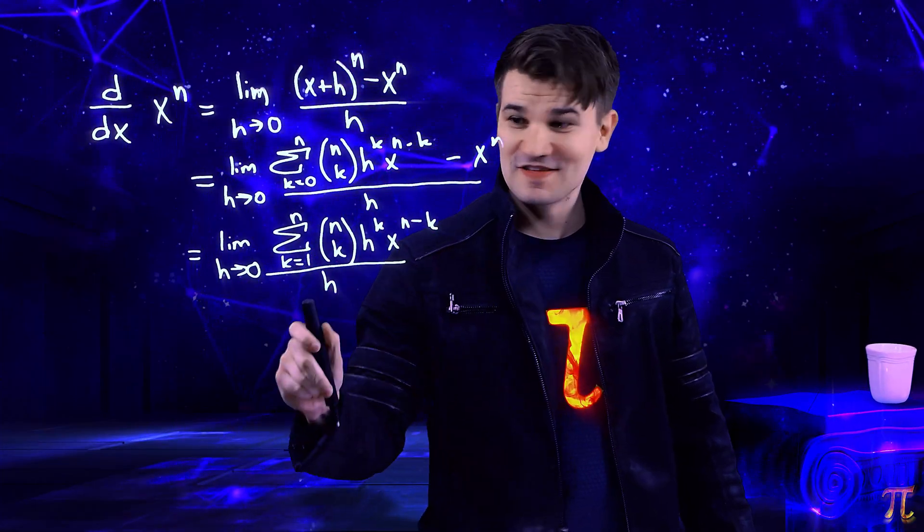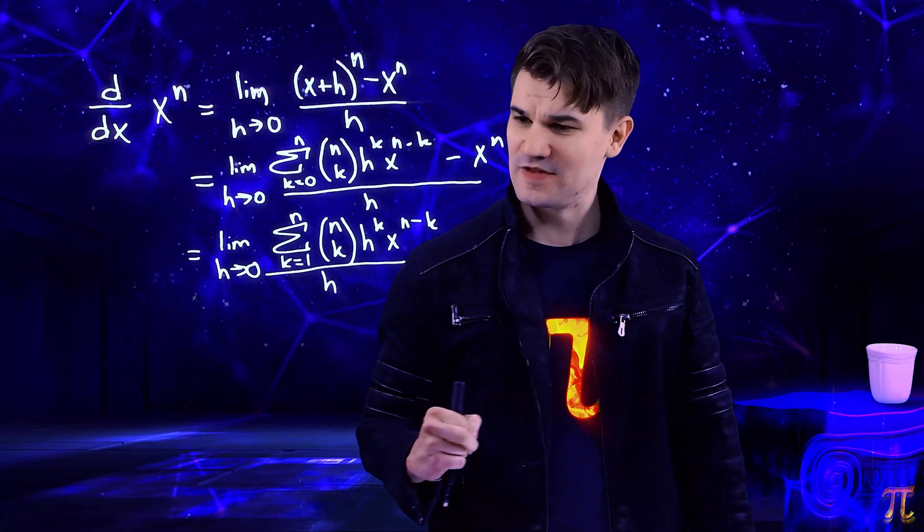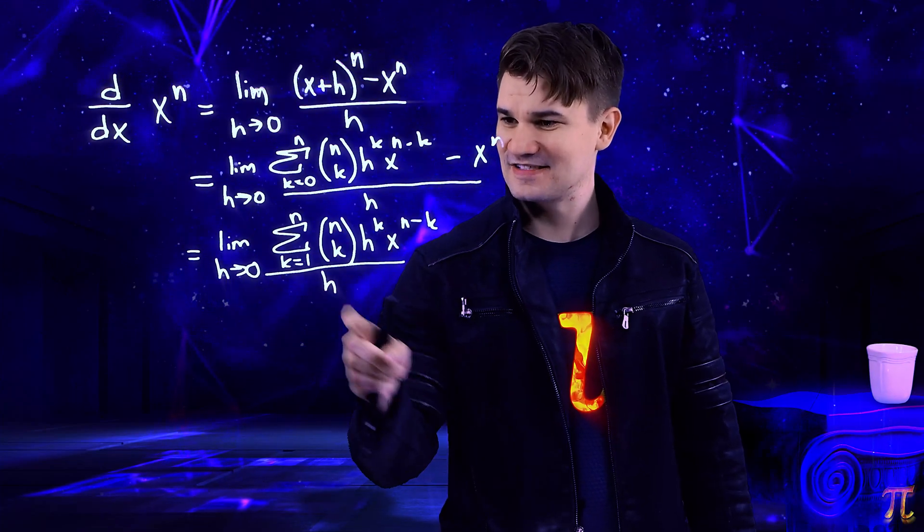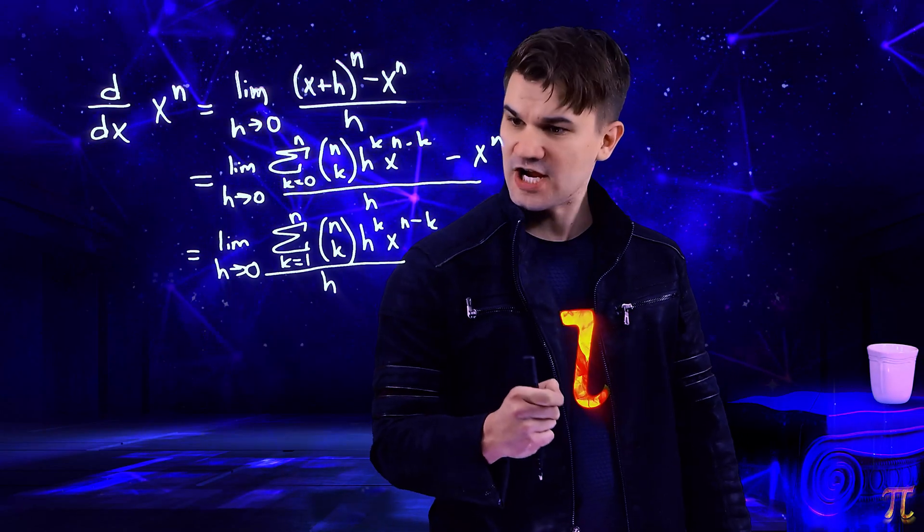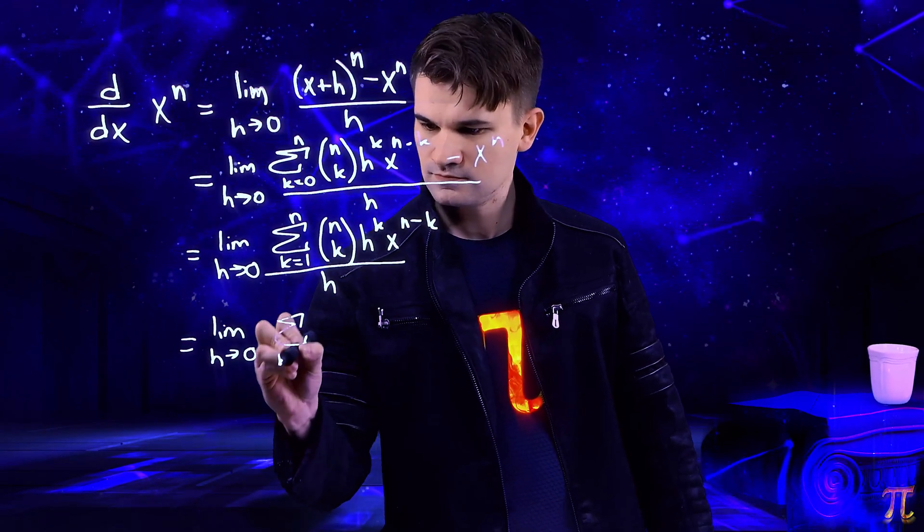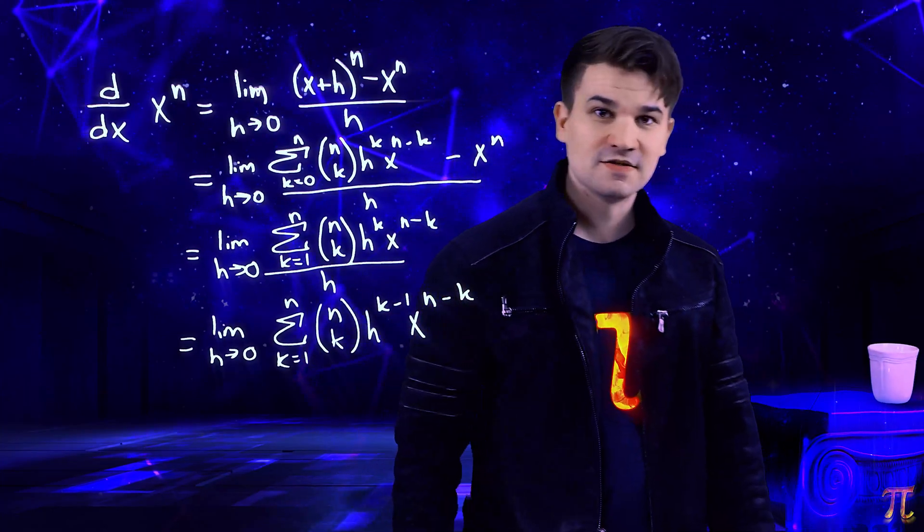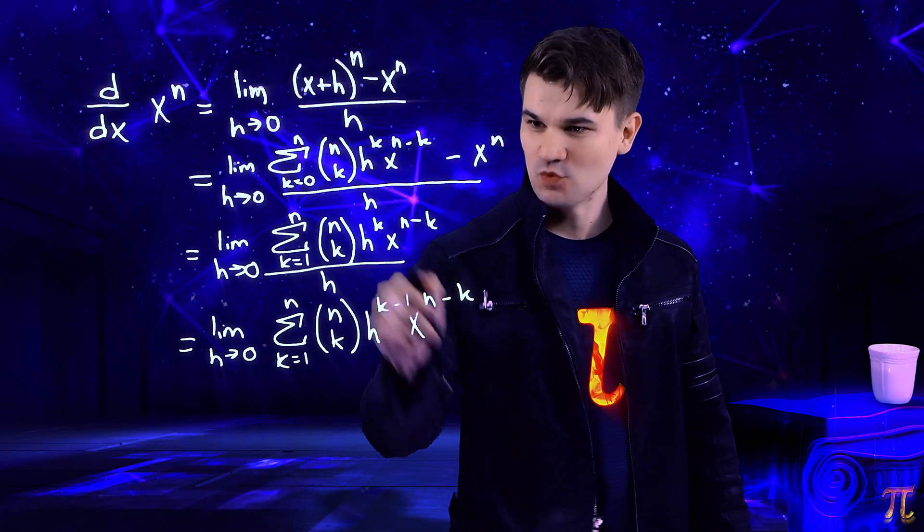So we're starting the sum at one now, bumping out that x to the n term and canceling it. Now every term here has an h in it because k is bigger than one, so we can actually divide h out. That's why the exponent is now k minus one instead of k - the exponent of h decreased by one in every term.